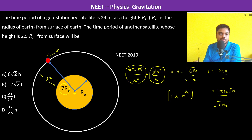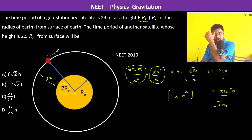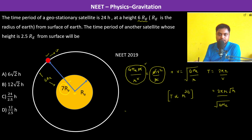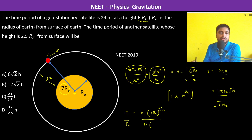For a height of 6Re, the distance r from the center of the earth is 7Re. Therefore T1 equals k times (7Re)^(3/2). Now T2 corresponds to a height of 2.5Re from the surface.